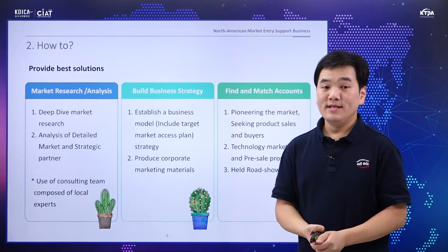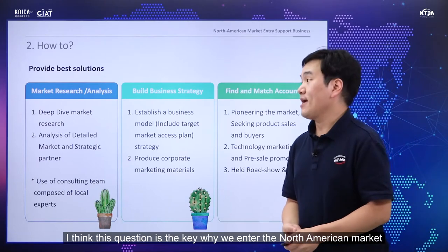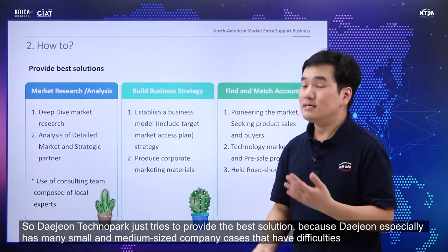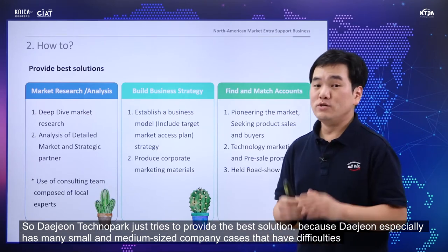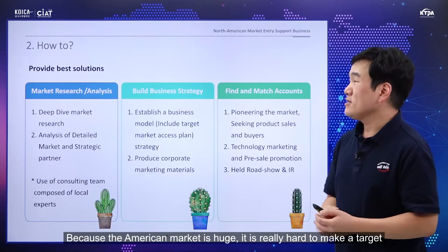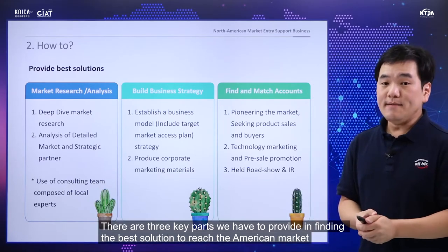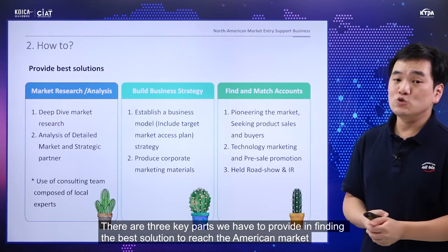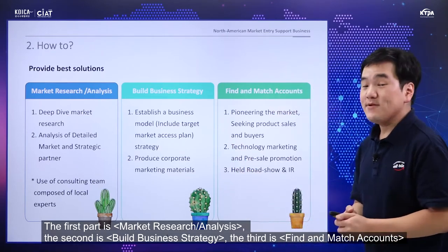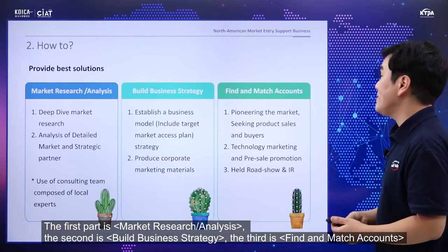The key question is: how do we enter the North American market? Daejeon Technopark tries to provide the best solution because smaller and mid-sized companies have difficulty since the American market is huge and hard to target. There are three key parts to finding the best solution: first, market research and analysis; second, build a business strategy; third, find and match accounts.